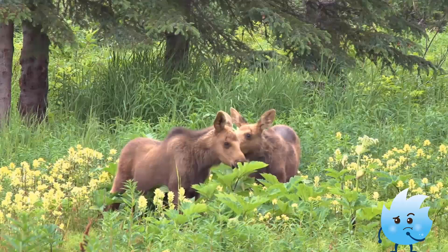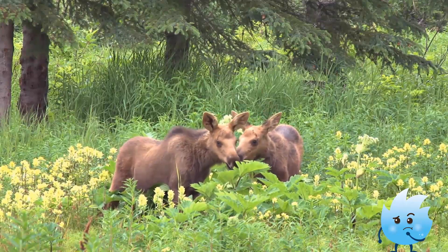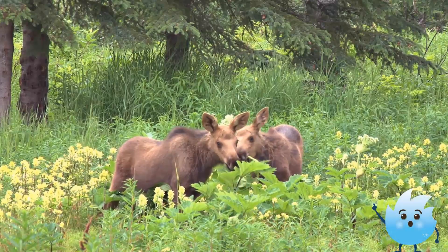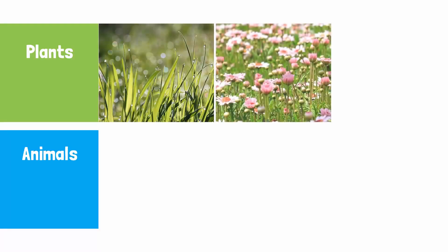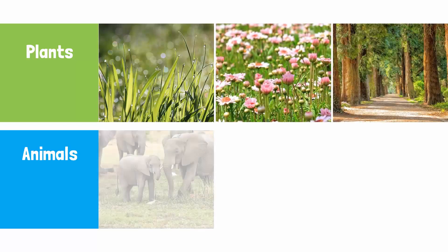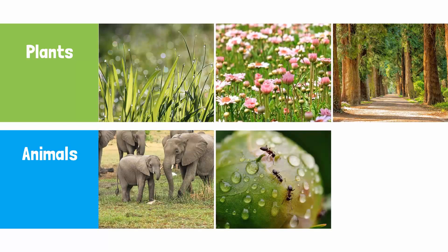Mrs. Coco, although plants and animals are both living things, they are so different. Plants are things like grass, flowers and trees, while animals are things like elephants, ants and humans.